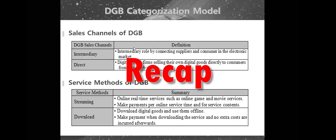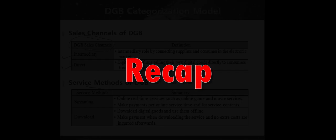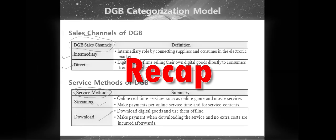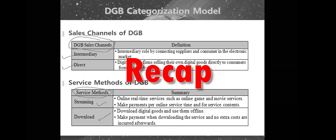DGB can be divided into two denominations named sales channels and service methods. Sales channels are classified as either intermediary or direct. On the other hand, service methods are streaming and download.